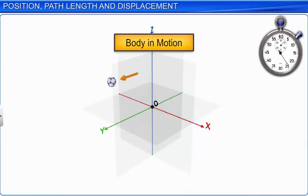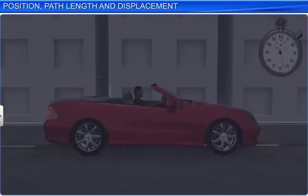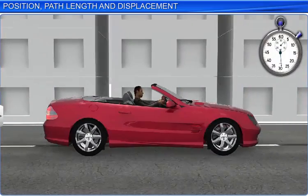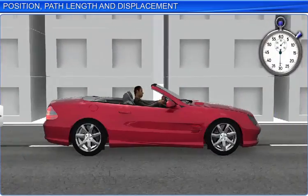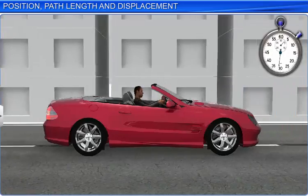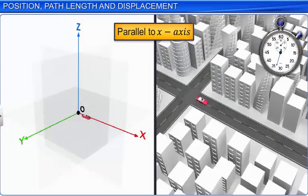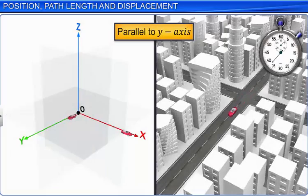The motion of a body with respect to the frame of reference could be parallel to the X axis, parallel to the Y axis, or parallel to the Z axis.